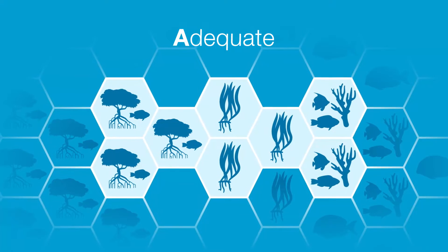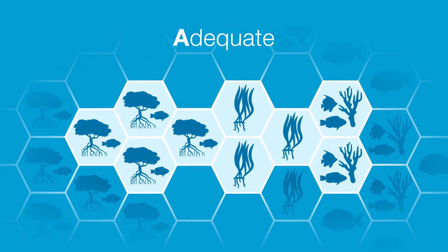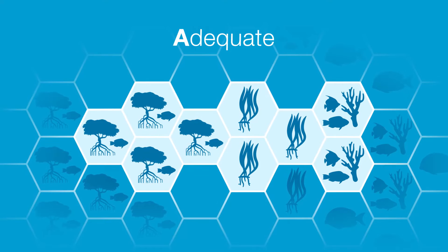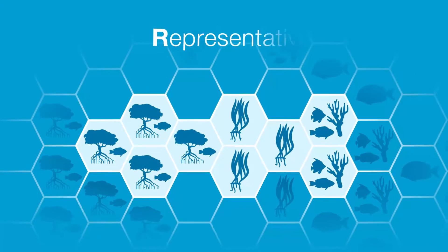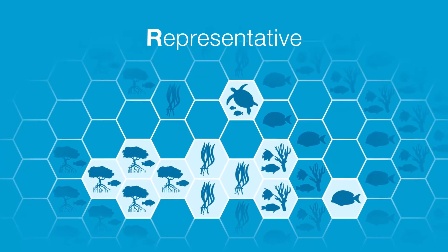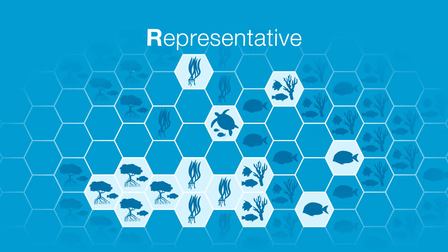Some species and habitats need more protection than others. We often refer to these habitats and species as conservation features. A representative marine reserve system is one that captures and protects a sample of all of the habitats and important species present. On top of protecting an adequate amount of each habitat, it is important to spatially replicate the protection of features in a conservation plan.